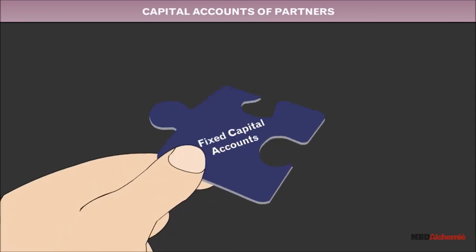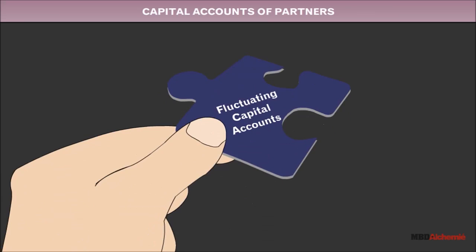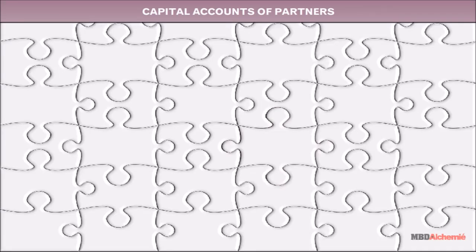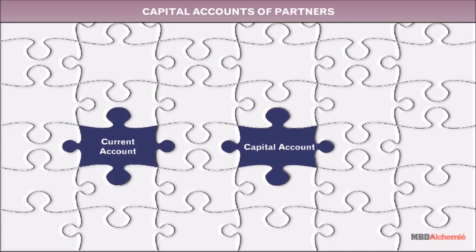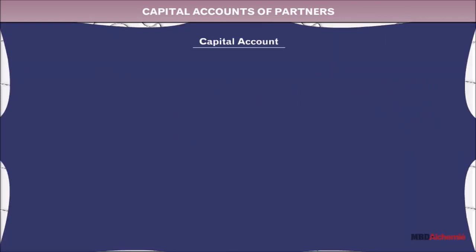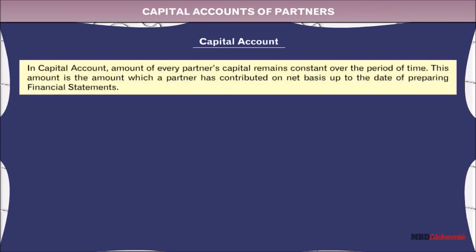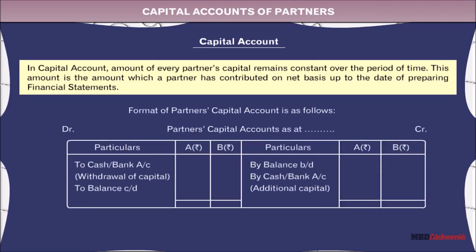Capital accounts of partners are of two types: fixed capital accounts and fluctuating capital accounts. Fixed capital accounts are of two types: capital accounts and current accounts. In the capital account, the amount of every partner's capital remains constant over the period of time. This amount is the amount which a partner has contributed on a net basis up to the date of preparing financial statements. The format of the partners' capital account is as follows.